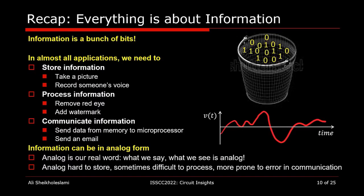Let me do a quick recap. Everything we said so far is about information. Information is a bunch of bits — a bucket of bits. The presentation slides you see right now, the voice you hear right now, have been translated to bits, stored in memory, and are being processed and communicated to you at this very moment. In all applications, we need to store information, like taking a picture or recording someone's voice; process information, like removing the red eye from a photo or adding a watermark; and communicate information, such as sending data from a memory to a microprocessor or sending email to your friend.